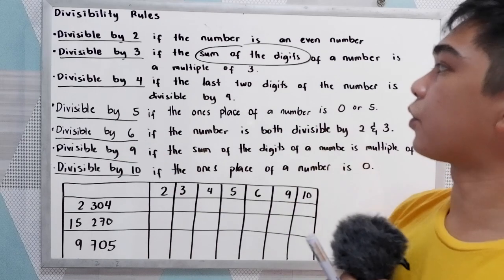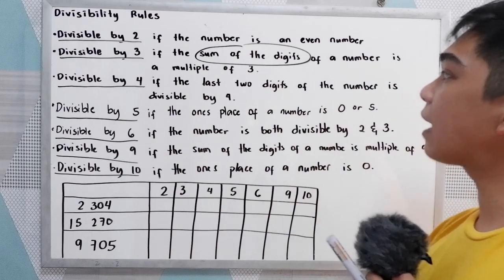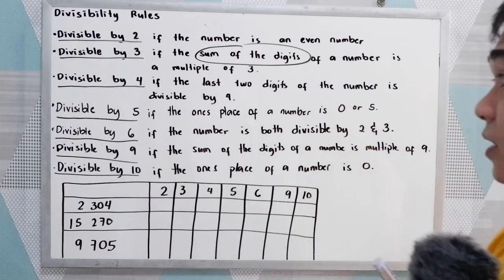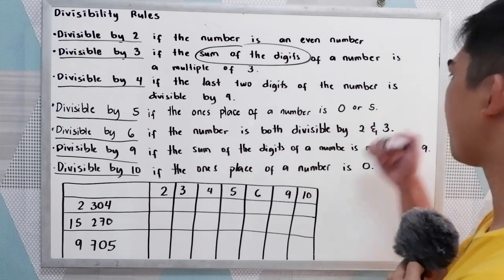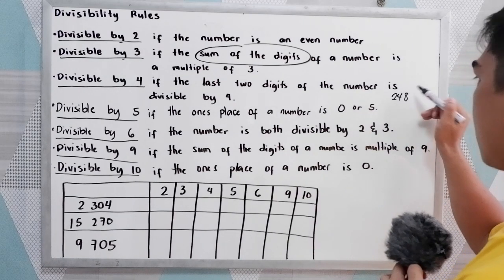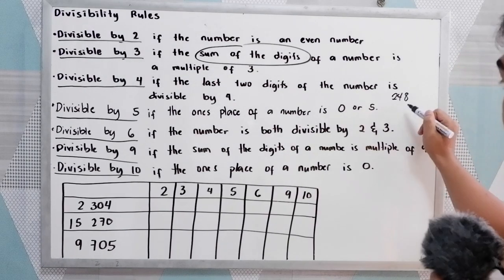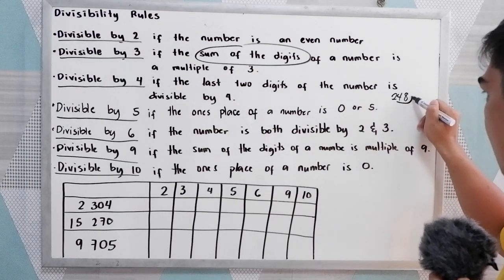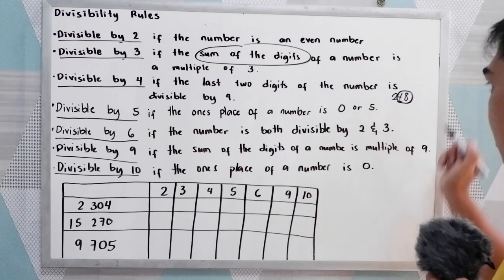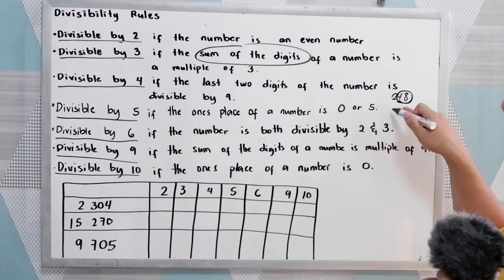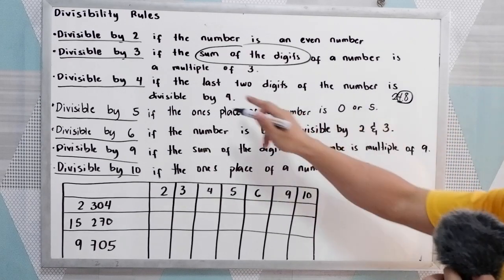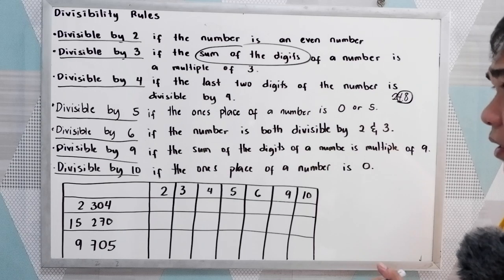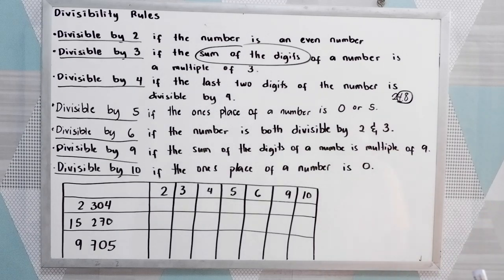Divisible by 4: if the last two digits of the number are divisible by 4. For example, we have 248 — just get the last two digits, 48, and check if it is divisible by 4. Since 48 is divisible by 4, that means the number is divisible by 4.